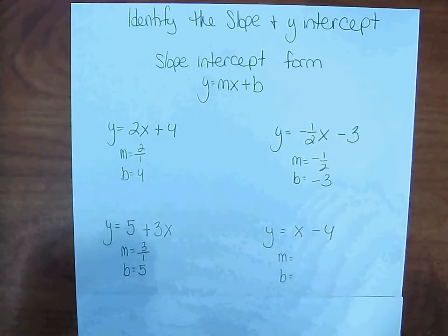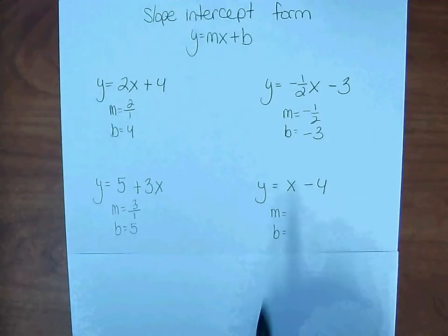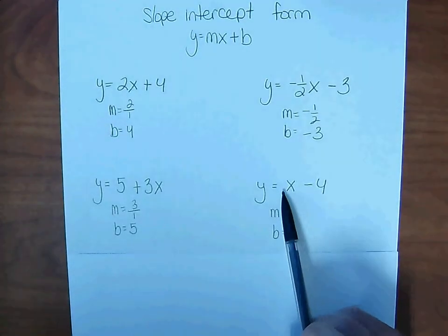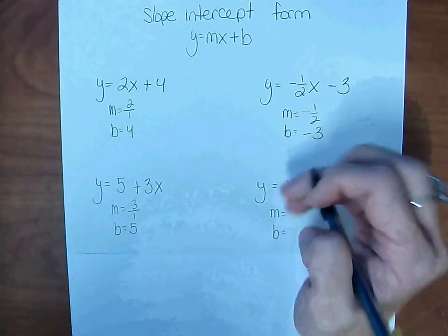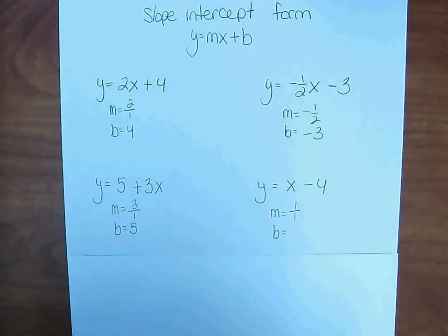y = x - 4. When you look at x, there's no number out in front. But you have to remember that when you don't see a number, there's an understood 1. So the slope is 1/1. Y-intercept: -4.